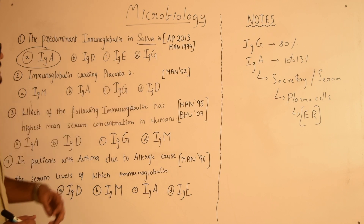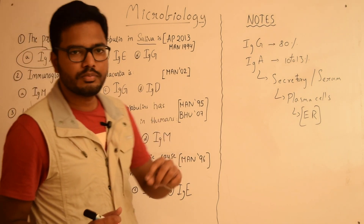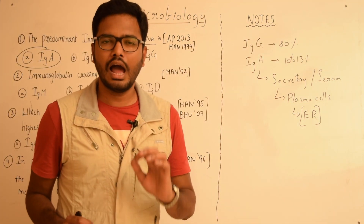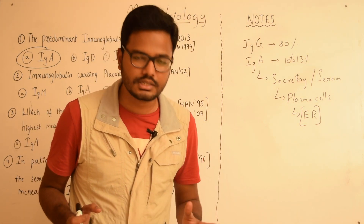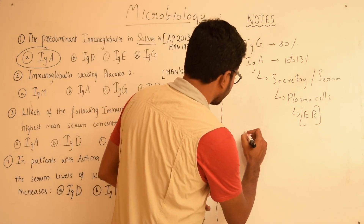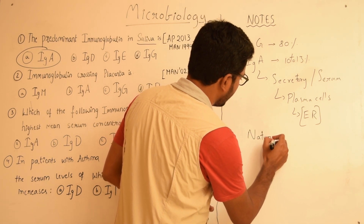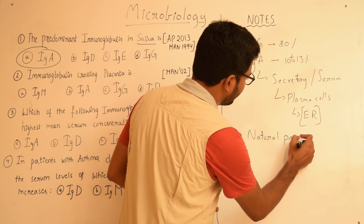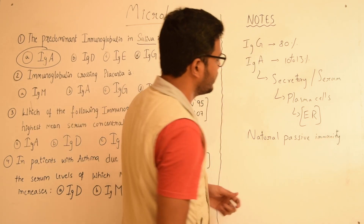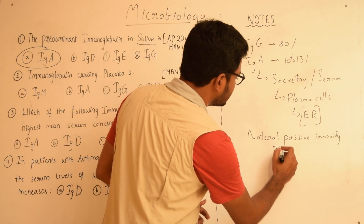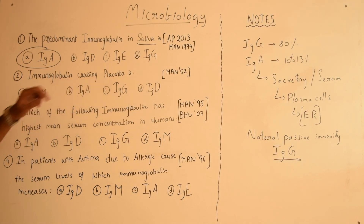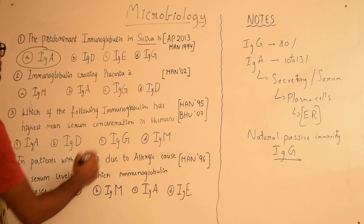As previously discussed, IgG is the major serum immunoglobulin. IgG is the only maternal immunoglobulin which crosses the placenta and provides natural passive immunity to the child. So the immunoglobulin crossing the placenta and providing natural passive immunity to the newborn is IgG.